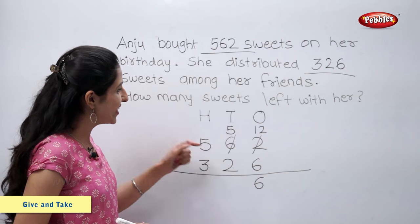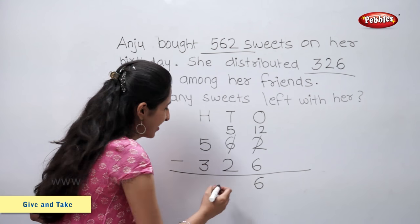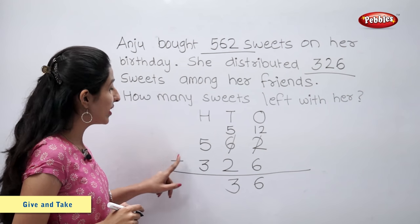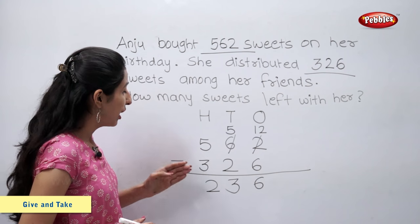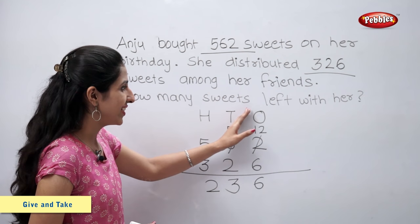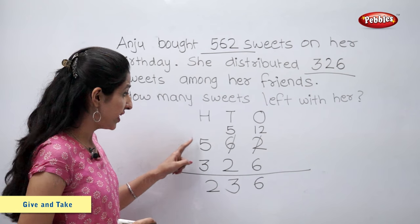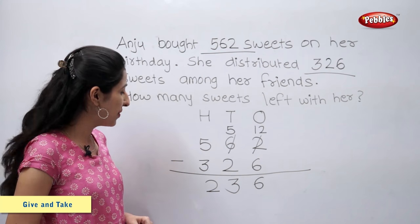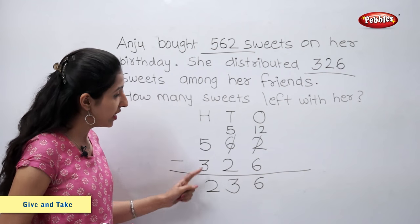Now twelve minus six is equal to six. Let us subtract tens: five minus two is equal to three. Now hundreds: five minus three is equal to two. So we have two hundreds, three tens, six ones. The number is two hundred and thirty-six. So, 562 minus 326 is equal to 236. Anju is left with two hundred and thirty-six sweets.